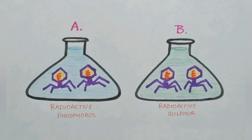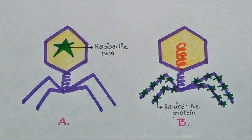Hershey and Chase grew some viruses on a medium that contained radioactive phosphorus and some others on a medium that contained radioactive sulfur. Viruses grown in the presence of radioactive phosphorus contained radioactive DNA but not radioactive protein, because DNA contains phosphorus but protein does not. Similarly, viruses grown on radioactive sulfur contain radioactive protein but not radioactive DNA, because DNA does not contain sulfur.